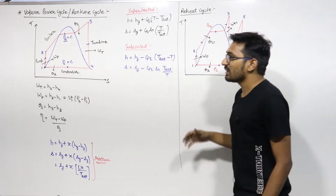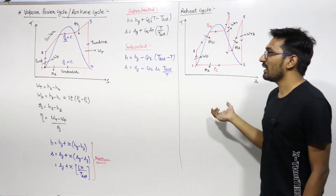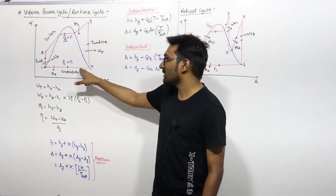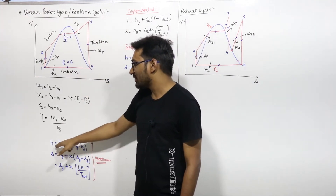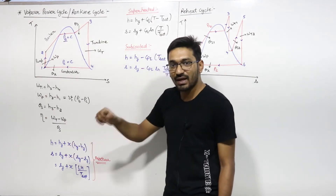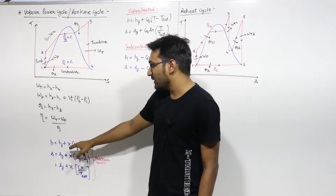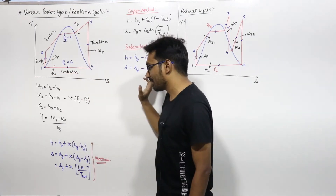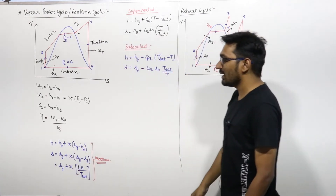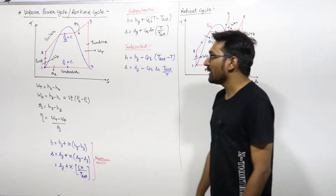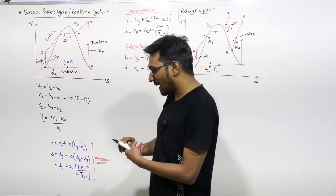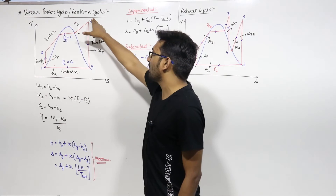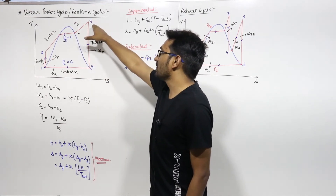So you need to find enthalpy in the subcooled region, superheated region, or mixture region. If point 4 falls in the mixture region, then H at that point will be equal to HF — the enthalpy at the liquid state — plus dryness fraction X into (HG minus HF) at that temperature. Similarly, you know how to calculate entropy. The dryness fraction won't be directly given in the paper.